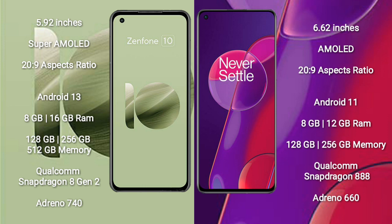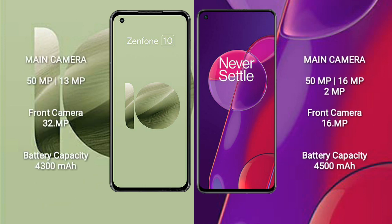The OnePlus 9RT runs on Android 11 and comes with 8GB or 12GB of RAM and 128GB or 256GB of internal storage, with a Qualcomm Snapdragon 888 processor and Adreno 660 GPU. The Asus Zenfone 10 features a dual rear camera setup of 50MP plus 13MP and a 32MP front camera, while the OnePlus 9RT has a quad rear camera setup of 15MP plus 16MP plus 2MP and a 16MP front camera.